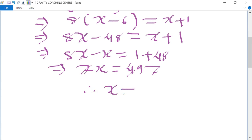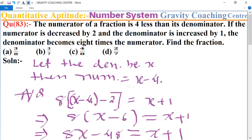Hence, the fraction equals numerator upon denominator. The numerator is x minus 4 and the denominator is x, so the fraction is x minus 4 upon x.